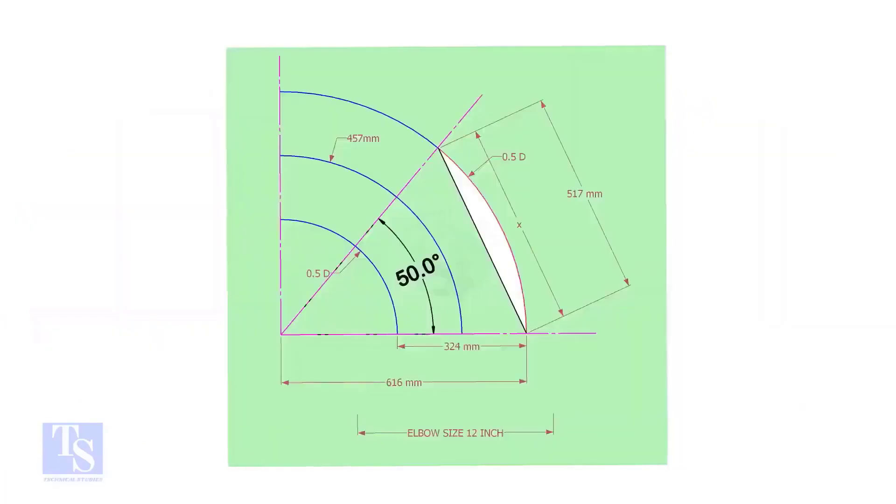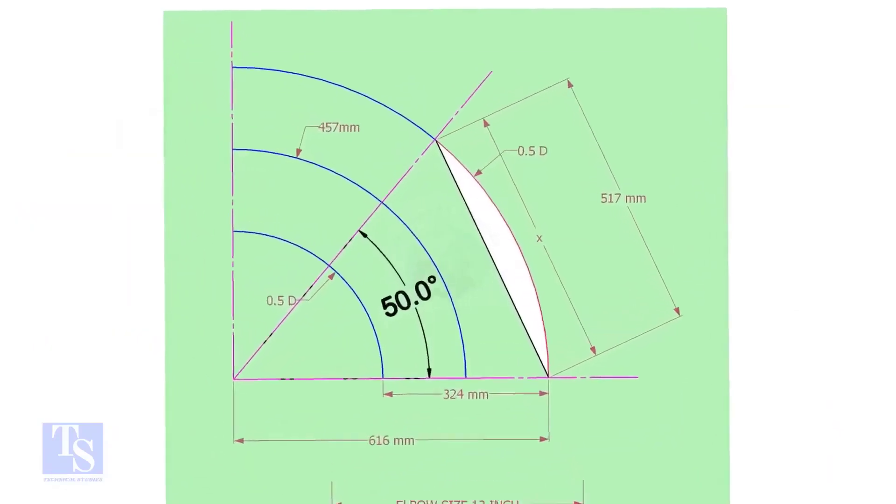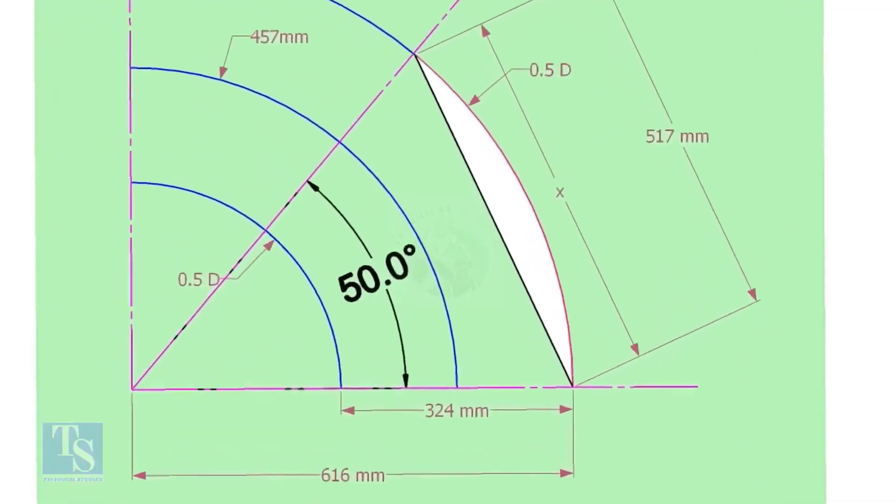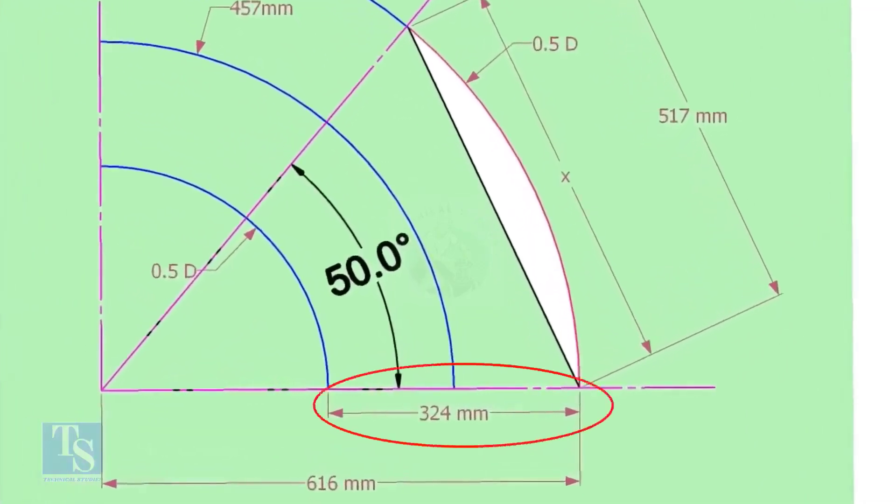Let us draw a simple layout of the elbow. Draw a horizontal line and another line perpendicular to this line. Center of a 12-inch long radius elbow is 457 millimeters. Draw an arc of length with this dimension. Draw another two arcs on both sides of this arc, adding and subtracting half OD of the elbow.